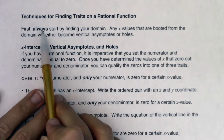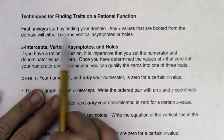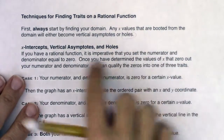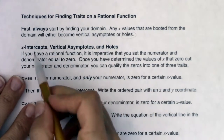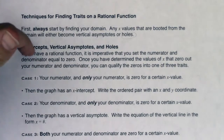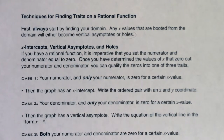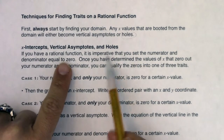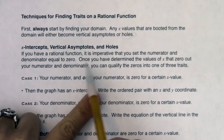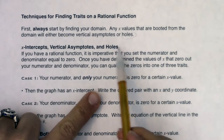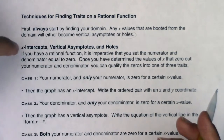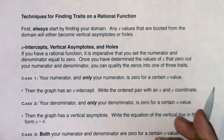Before you do anything, always find your domain. Any x values that are booted from the domain will either become vertical asymptotes or holes — I haven't talked about holes yet, but that's coming. These three traits tend to get lumped together: x-intercepts, vertical asymptotes, and holes. You can identify these three depending on what zeroes out. It's imperative that you set both the numerator and denominator equal to zero.